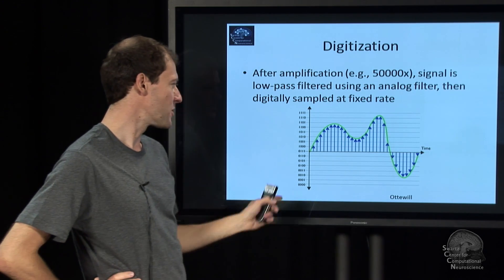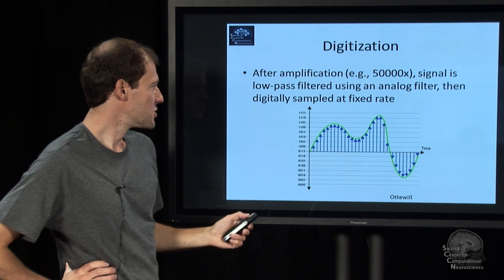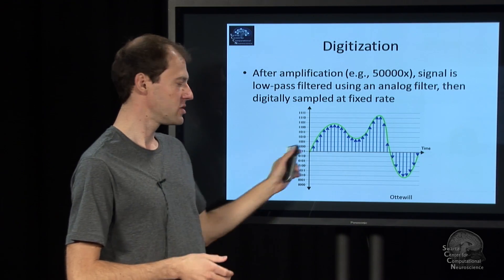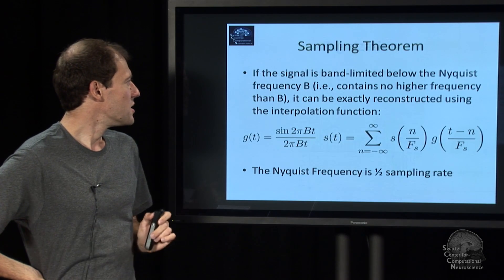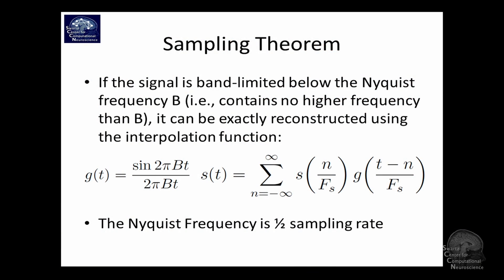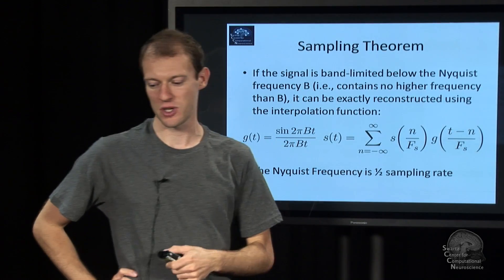But we know the signal is band-limited — we low-pass filtered it — so we don't actually interpret it as a stepping function. Usually there's a certain highest frequency you want to handle, you filter just above that, and digitize at twice the rate, and you're completely fine. The sampling theorem says that if your signal is band-limited below half your sampling rate — the so-called Nyquist frequency — you can exactly reconstruct it from the sampled time series using a sinc interpolation function.